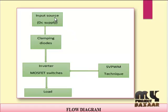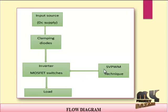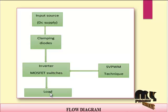This is the flow diagram of our product. The input source is a DC source, which is fed to the inverter block. This inverter block converts DC to AC through clamping diodes and MOSFET switches. After conversion, the AC supply is fed to the load. We are using space vector pulse width modulation technique — this block generates the pulses, which are fed to the MOSFET switches, and the inverter converts DC to AC. The load is an AC traction control load.